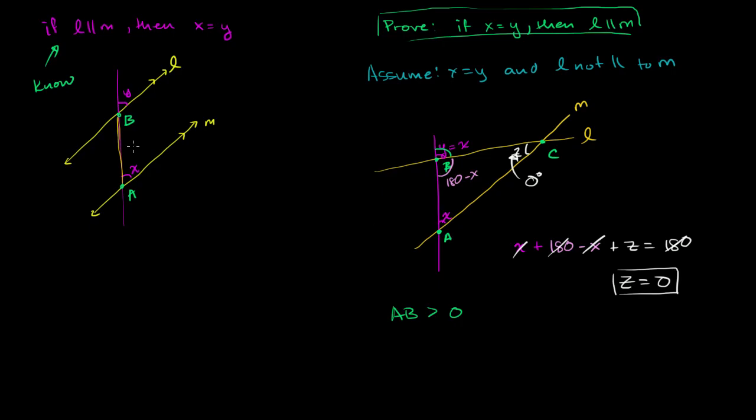It would have to be, essentially, you could call it maybe like a degenerate triangle. It wouldn't even be a triangle. It would be a line. These two lines would have to be the same line. They wouldn't even form a triangle. And so this leads us to a contradiction. The contradiction is that this line segment AB would have to be equal to zero. Or another contradiction is that these two lines would have to be the same line, because there's no opening between them. So either way, this leads to a contradiction.